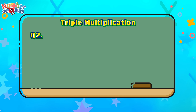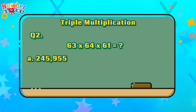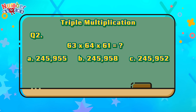Question number 2: 63 times 64 times 61 is equals to. Is it letter A, 245,955? B, 245,958? Or C, 245,952? And the right answer is letter C, 245,952.